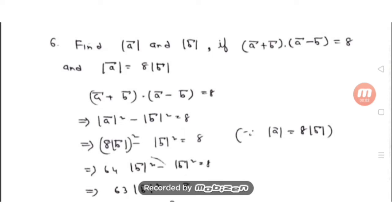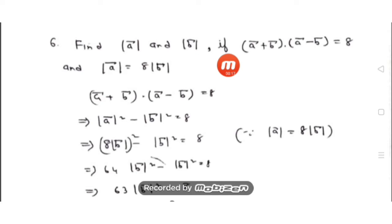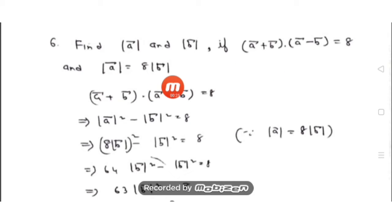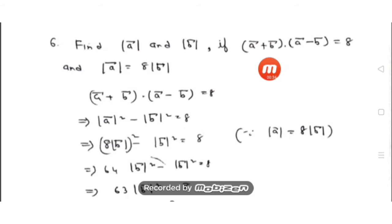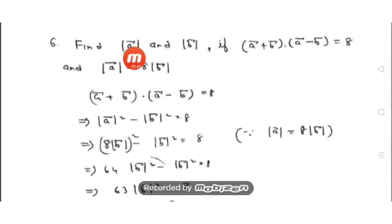Hello students, hope you have done the previous questions of exercise 10.3. Today I will do the solution from question number 6 of exercise 10.3. The question is: find modulus of a and modulus of b if (a + b)·(a - b) = 8 and |a| = 8|b|. Our aim is to get the magnitude of a and b using these two given relations.